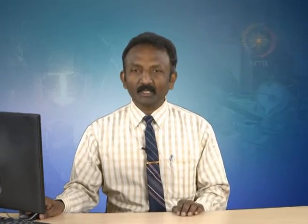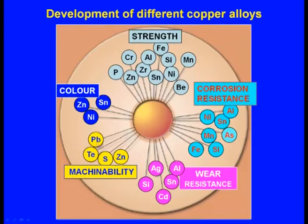If your objective is to increase the wear resistance of an alloy, then these elements are to be added: aluminum, tin, cadmium, silicon, silver and so on. If the objective is to increase the machinability of the copper alloy, then these elements are to be added: lead, zinc, sulfur and so on. And if your objective is to increase the color, then these are the elements: zinc, tin, nickel and so on.